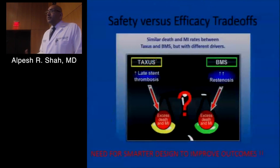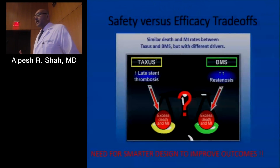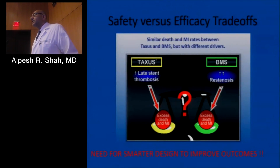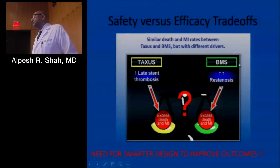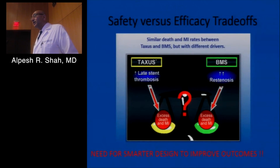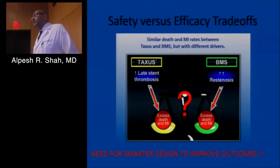There was a trade-off: first-generation drug-eluting stents showed more late stent thrombosis, while bare metal stents showed more restenosis. Death and MI rates were really no different with first-generation stents. We realized we needed a smarter design to improve outcomes — and that's where second-generation stents came along.